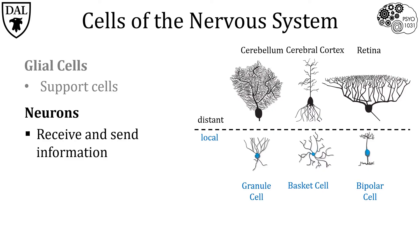Understanding neuronal structure has been at the forefront of neuroscience research since its very beginnings, with the pioneering work of Ramón y Cajal in the late 1800s. Still to this day, understanding neuronal structure serves as a key factor in understanding the diversity and functions of the nervous system.